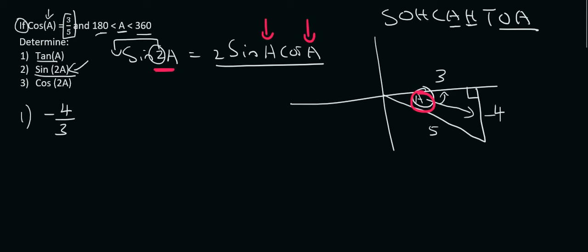So sin of A, well sin is opposite over hypotenuse, so that's going to be the 4 over 5, or minus 4 over 5. So that's going to be 2 times by minus 4 over 5, times by the cos of A, well they've given us that is 3 over 5.